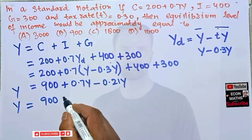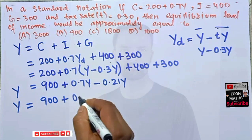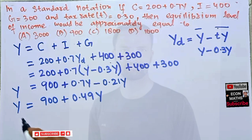Or we can further write it like this, we have 900 here plus now 0.7 minus 0.21 is equal to 0.49Y.